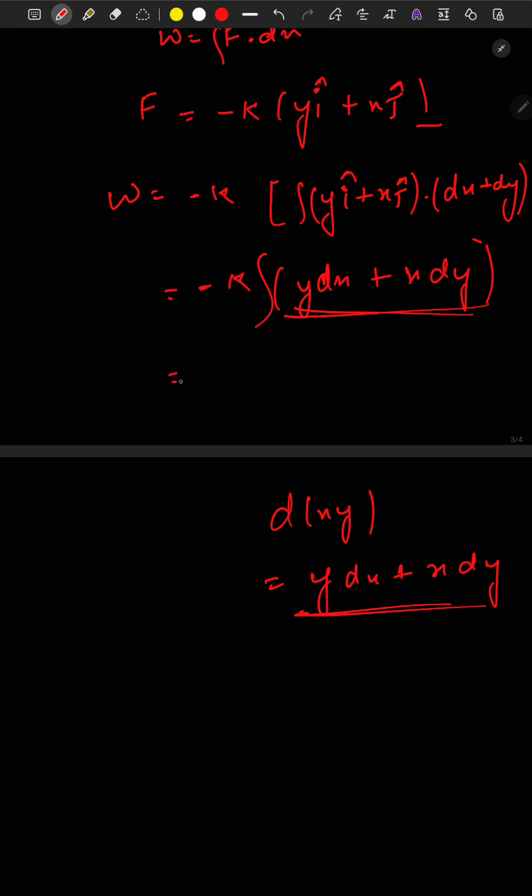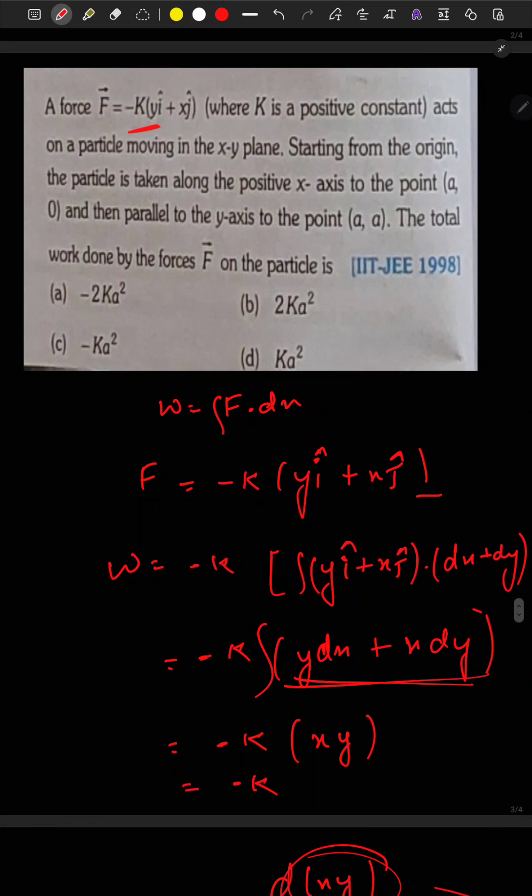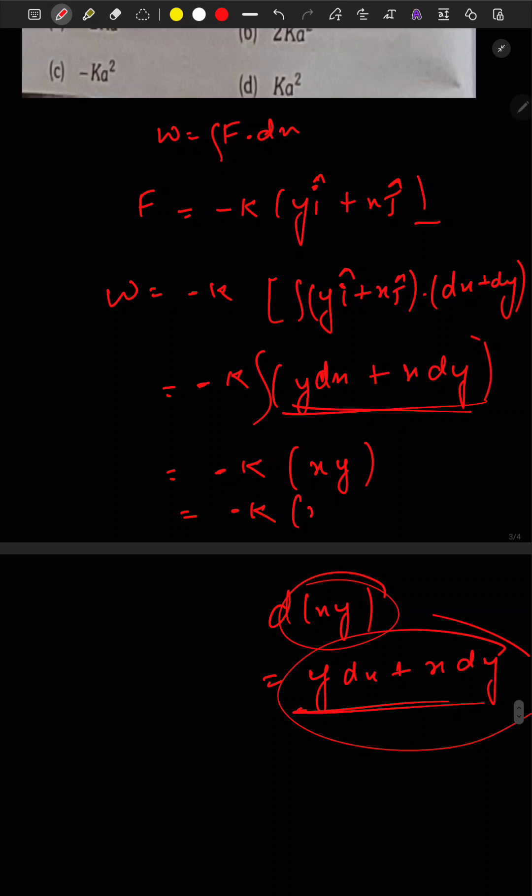So this will be equals to integration of d(xy) which is x times y. So minus K, the value of x and y here is (a, a) to (0, 0), so this will be equals to putting values a and a here.